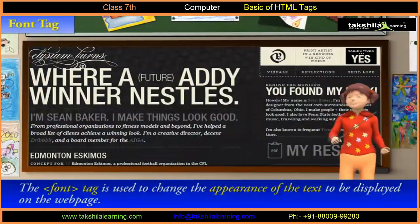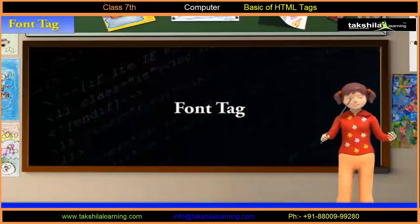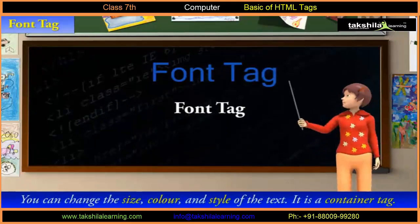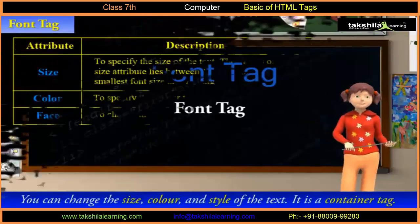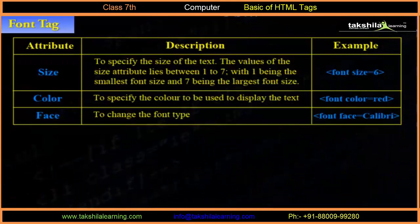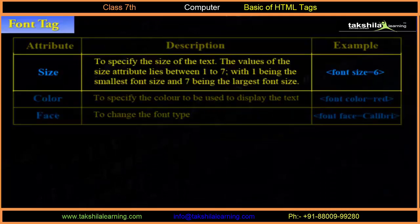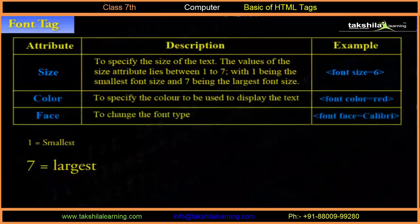The font tag is used to change the appearance of the text to be displayed on the web page. Using this tag, you can change the size, color, and style of the text. It is a container tag. The values of the Size attribute lie between 1 to 7, with 1 being the smallest font size and 7 being the largest font size — for example, font tag size is equal to 6.